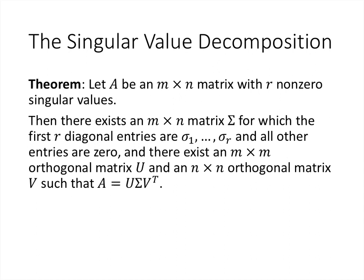The singular value decomposition theorem states: for any m by n matrix A with r non-zero singular values, there exists an m by n matrix Σ as just described, an m by m orthogonal matrix U, and an n by n orthogonal matrix V, such that A = U Σ V transpose. Since V is orthogonal, V transpose equals V inverse. We prove this by constructing U and V and showing A = U Σ V^T.